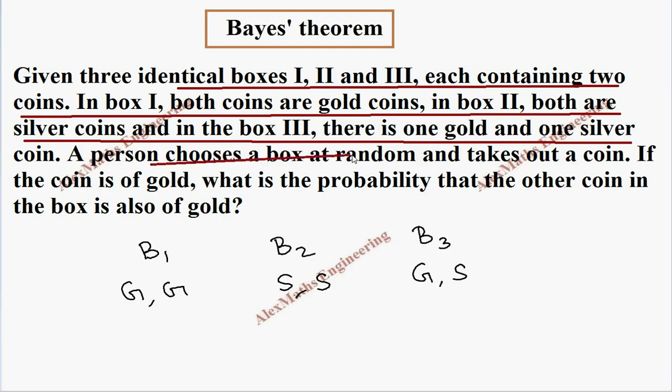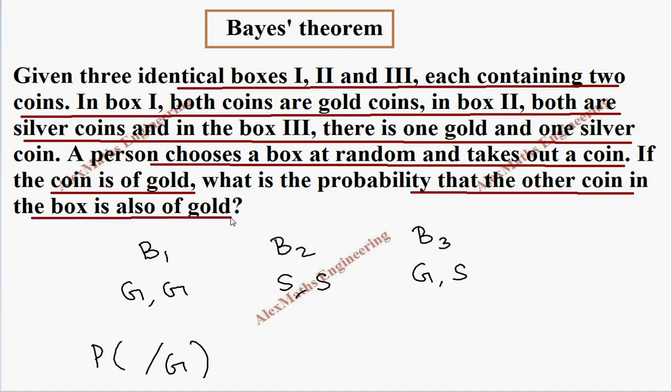A person chooses a box at random and takes out a coin and the coin is of gold. So, we already know there is a gold. What you picked is gold. And we have to find the probability that the other coin in the box is also of gold.